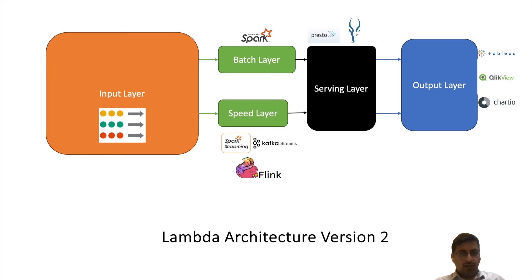There will be a lot of input data. Some data will be coming as batch and some as streaming data. The batch layer will process the batch data and the speed layer will process streaming data. The output of both layers will be combined and put into a serving layer. Consumers — a dashboard or downstream application — consume data from the serving layer and see a single view. This is Lambda architecture at a high level.